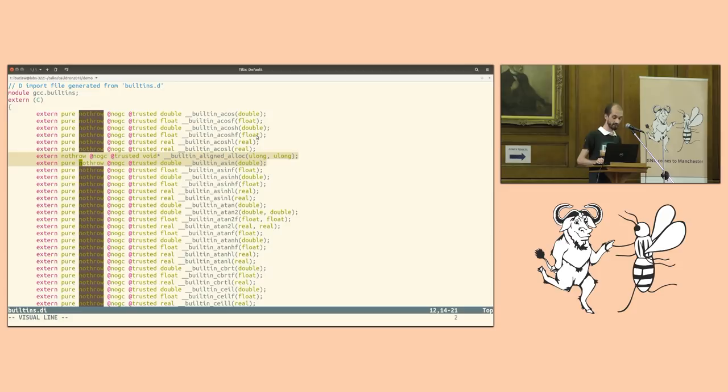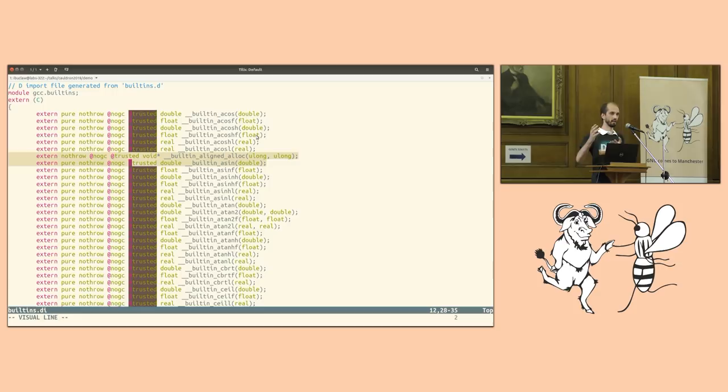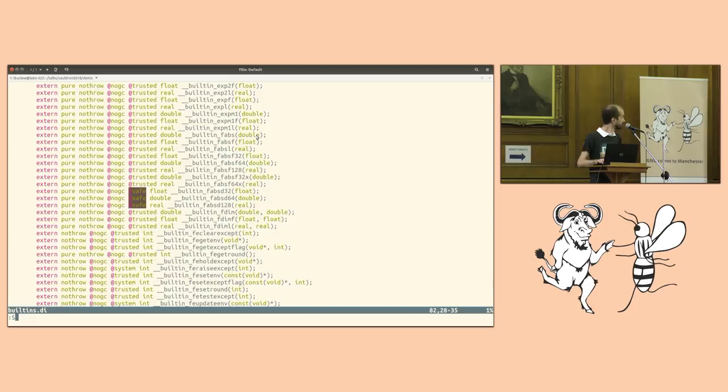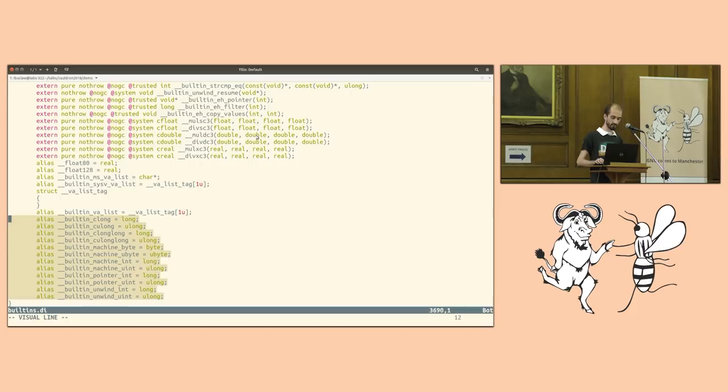Built-ins that have a fallback function, as in if the compiler can't do anything with it, it just calls the C function, are trusted. Built-ins that are expanded by the compiler are marked as safe. We also, for convenience, we have some types which are basically just C type mappings to D types. We also define va_list, along with target types, and also functions.